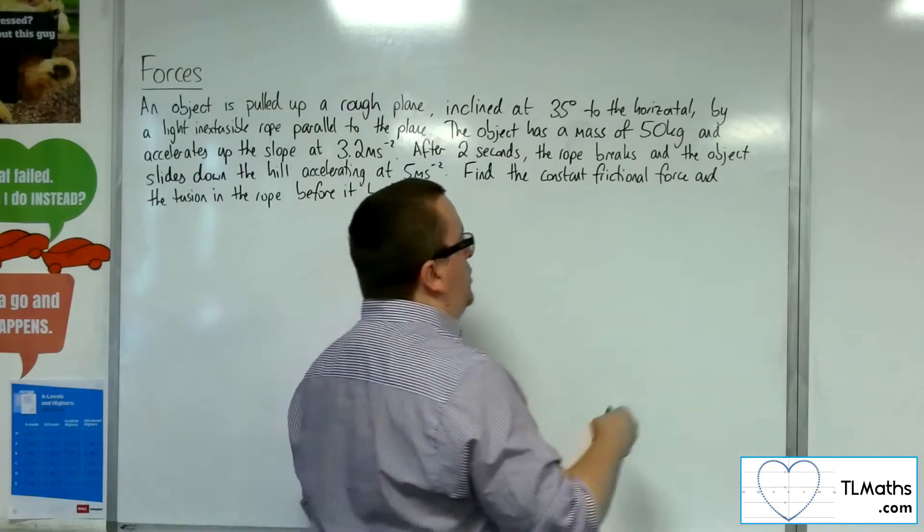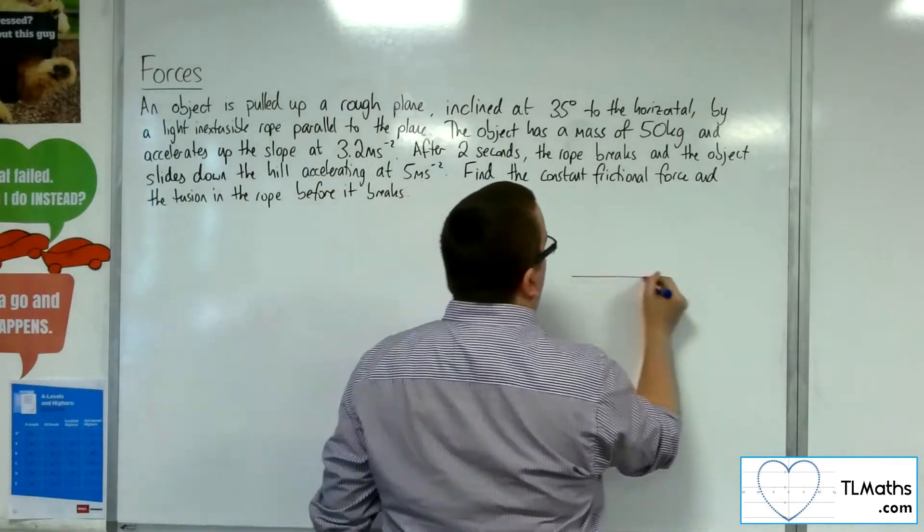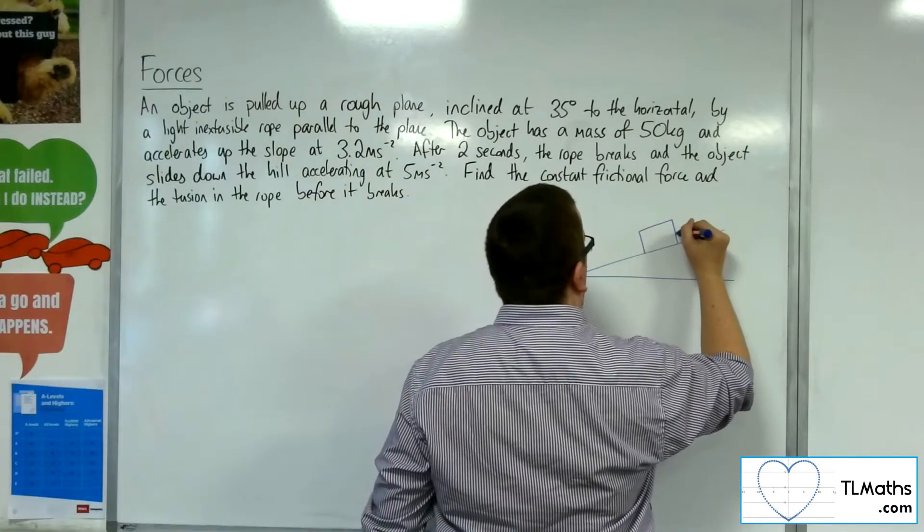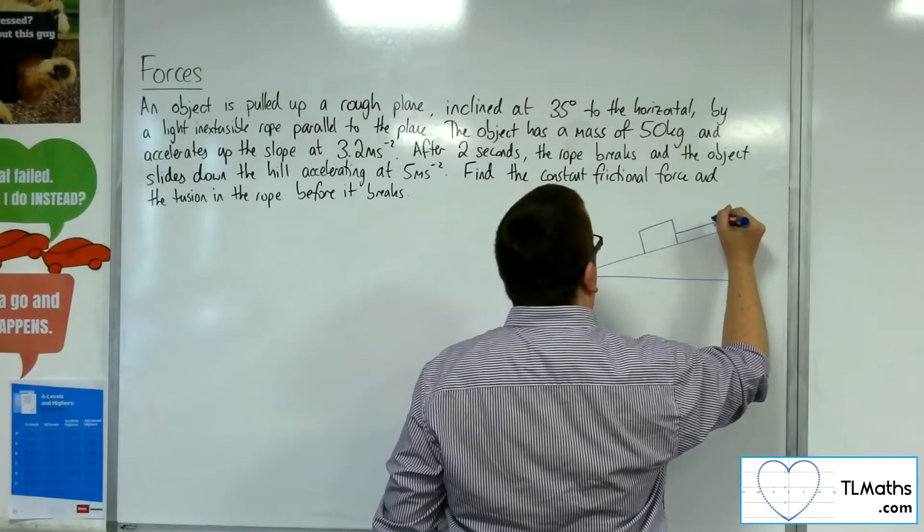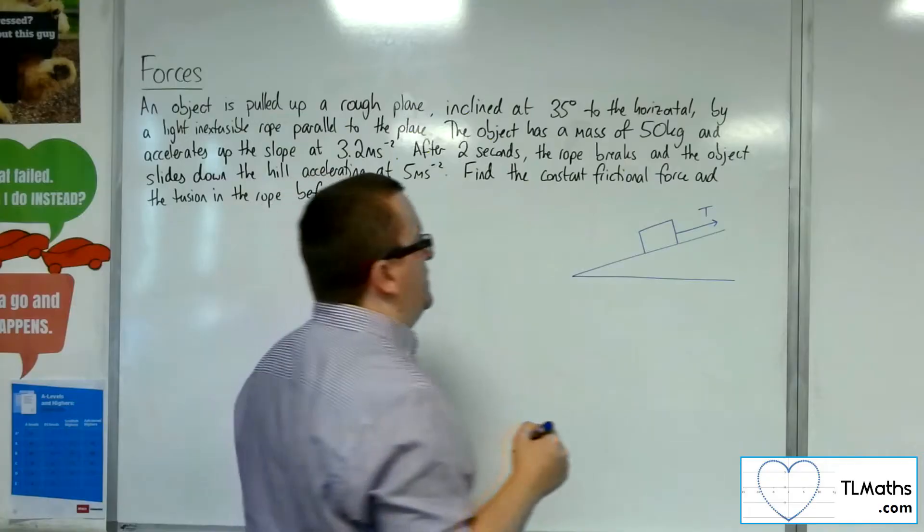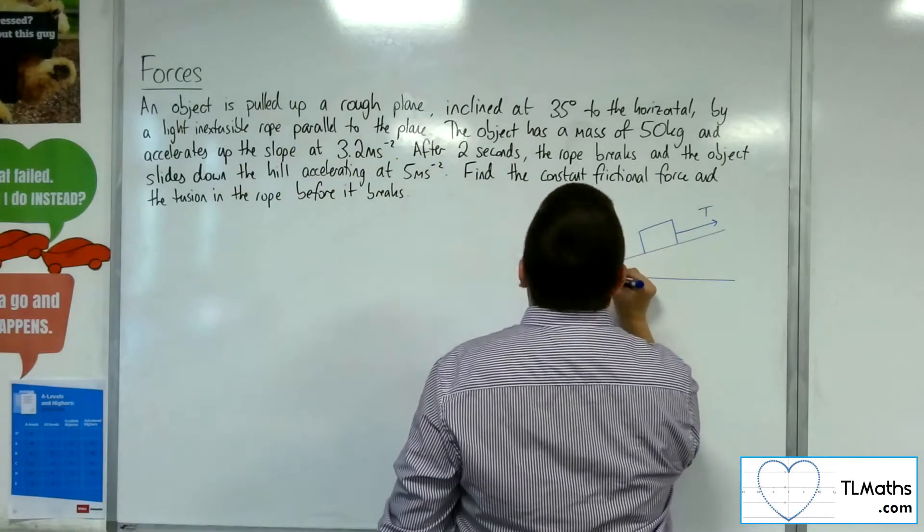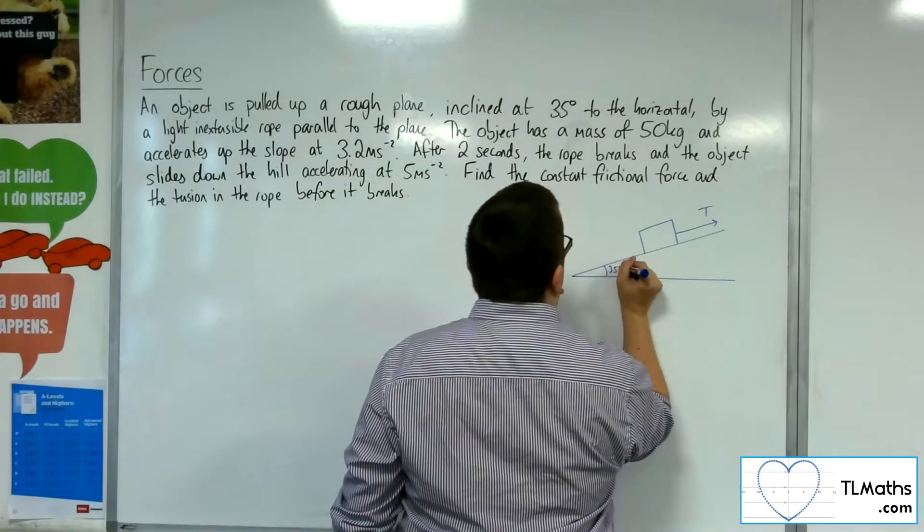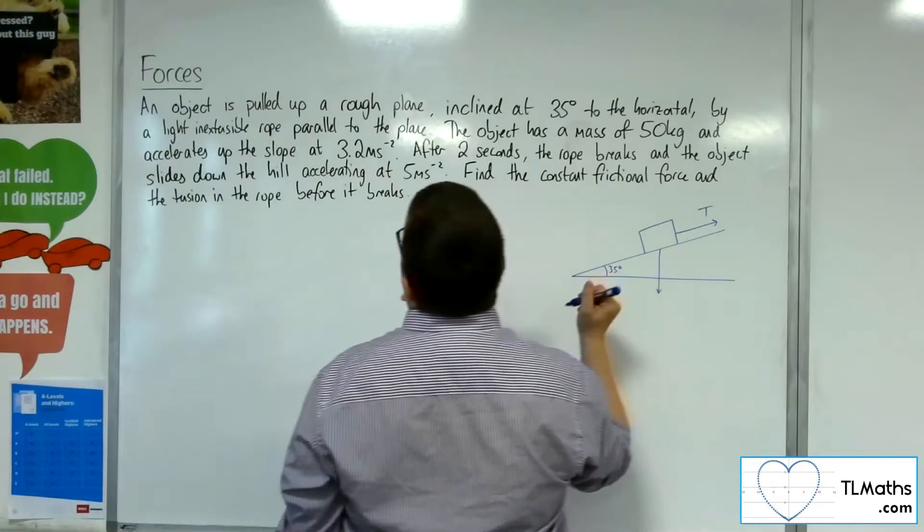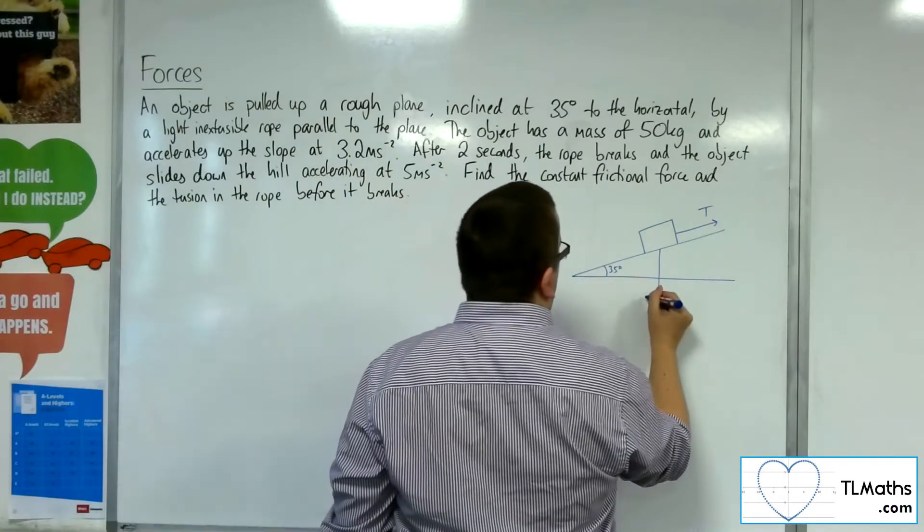We've really got two situations here. We've got this first bit where the object is being pulled up the slope by that rope with tension T. It's a 35 degree inclined angle. You've got the weight working vertically downwards. It's 50 kilos, that's 50g.